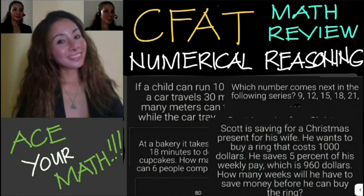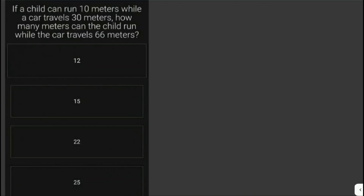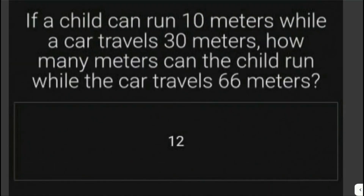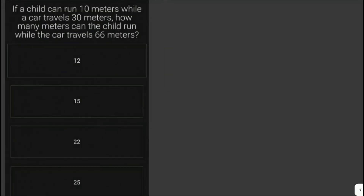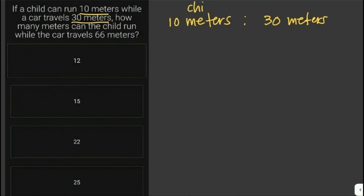Let's solve some math problems here to prepare for the CFAT test. If a child can run 10 meters while a car travels 30 meters, how many meters can the child run while the car travels 66 meters? To solve this we can use ratios. So: 10 meters is to 30 meters — this is for the child, and this is for the car.